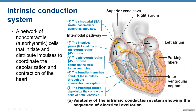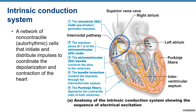The intrinsic conduction system — shown in yellow on the diagram — is a network of non-contractile autorhythmic cells that initiate and distribute impulses to coordinate depolarization and contraction of the heart. These are not nervous tissue but specialized cardiac muscle conducting cells. The first set of cells is the SA node, or sinoatrial node, the pacemaker that generates impulses. It is located inside the right atrium, next to the entrance of the superior vena cava.